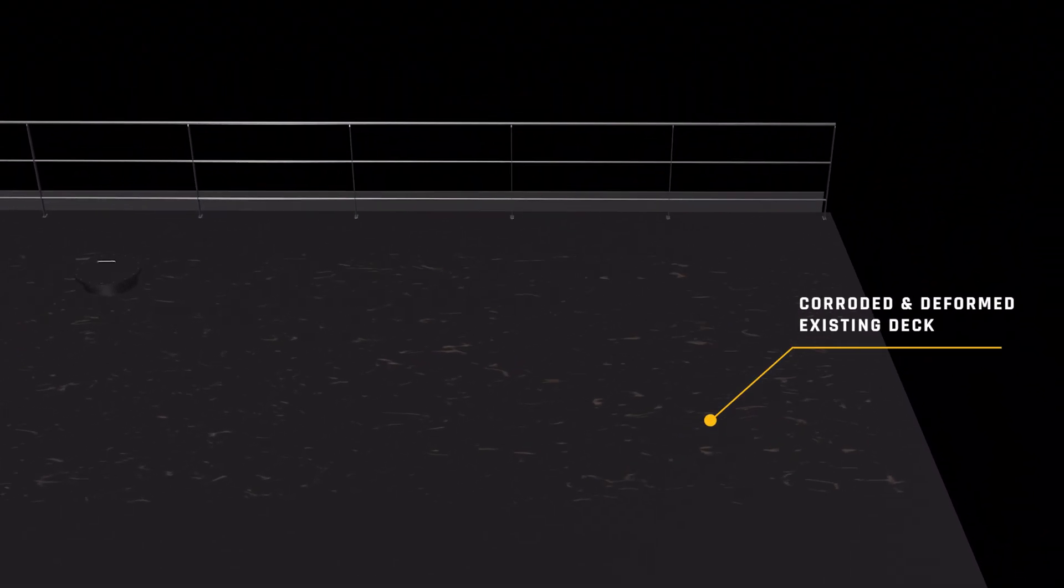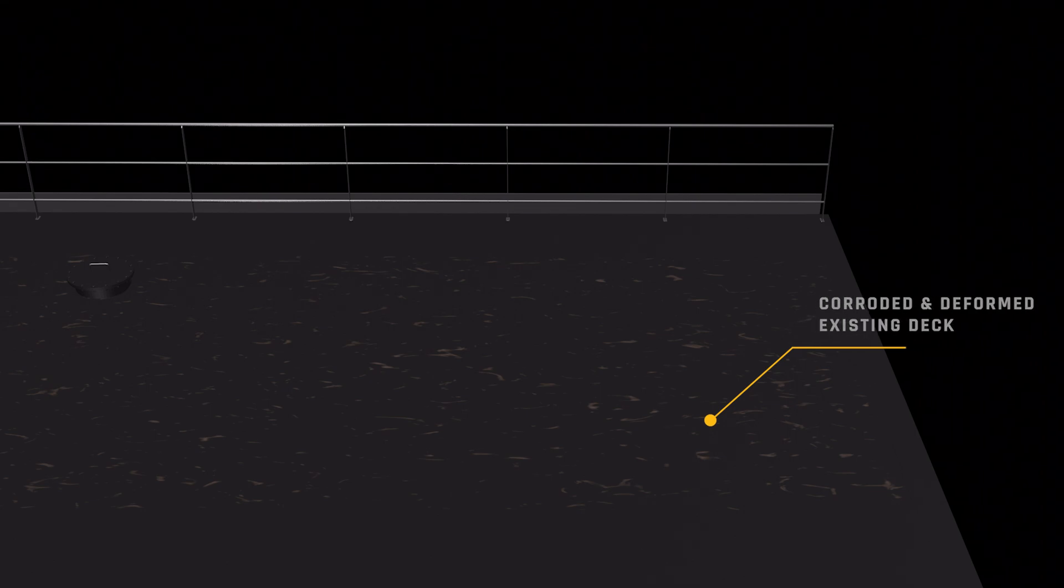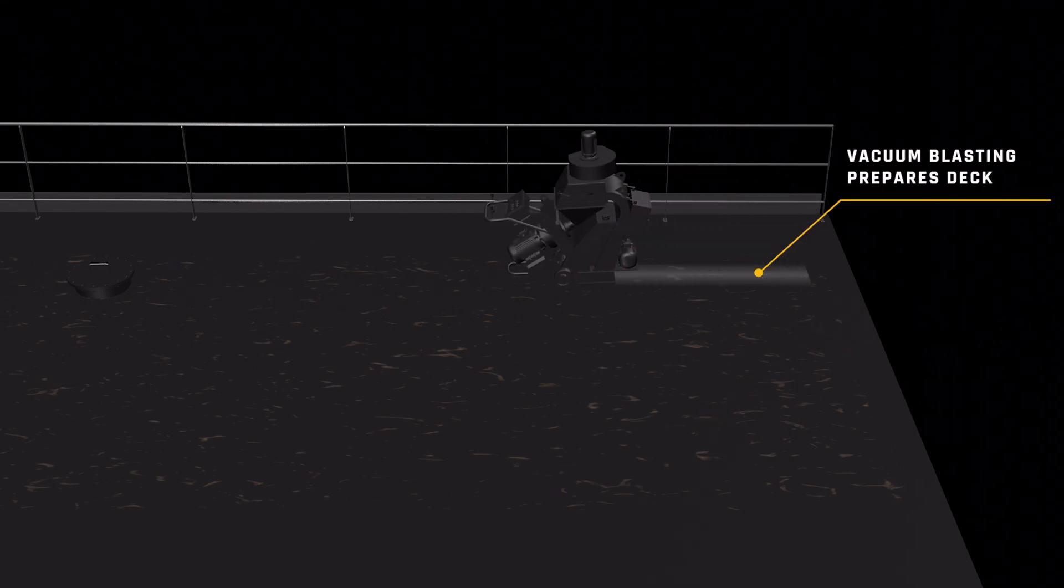An on-site SPS cold work installation begins with preparing the existing corroded plating using vacuum blasting to achieve the required cleanliness and minimum surface roughness of 60 microns.